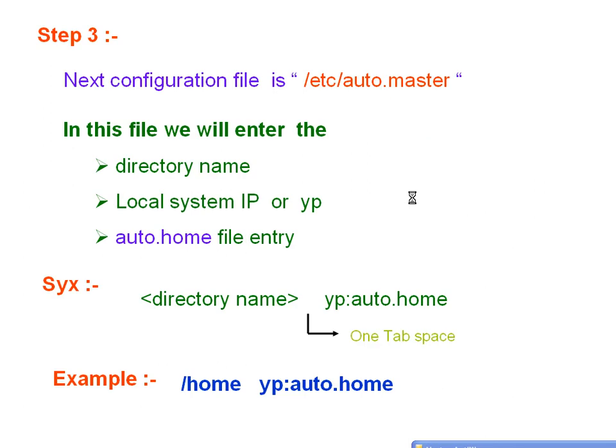Step number four: the next configuration file is /etc/auto.master. In this file we will enter the directory name and the yp auto.home file entry. The syntax is: directory name, tab space, then yp:auto.home. For example: /home [tab] yp:auto.home.